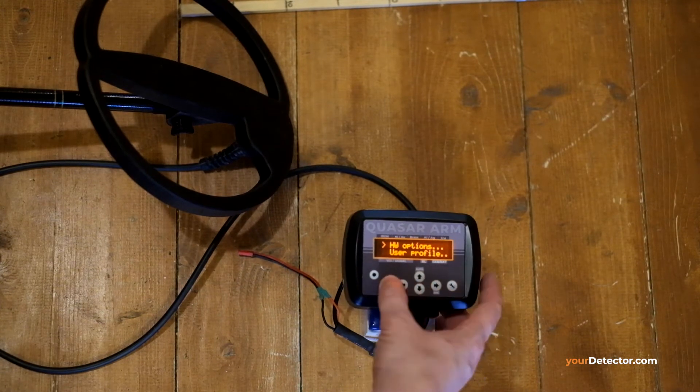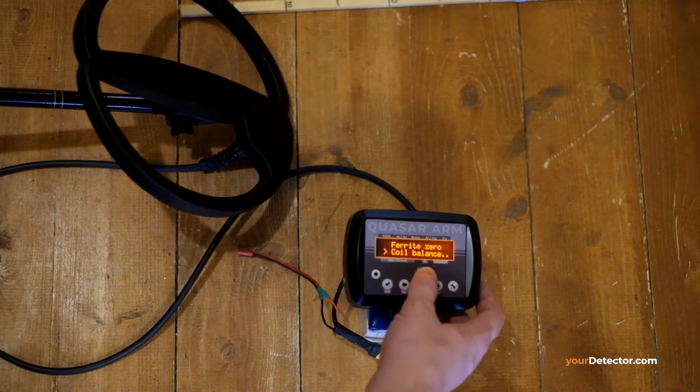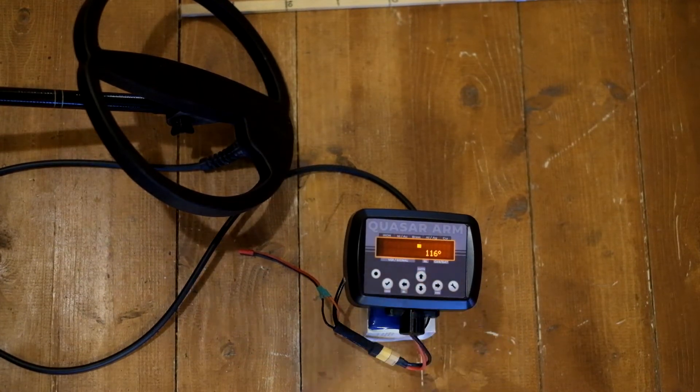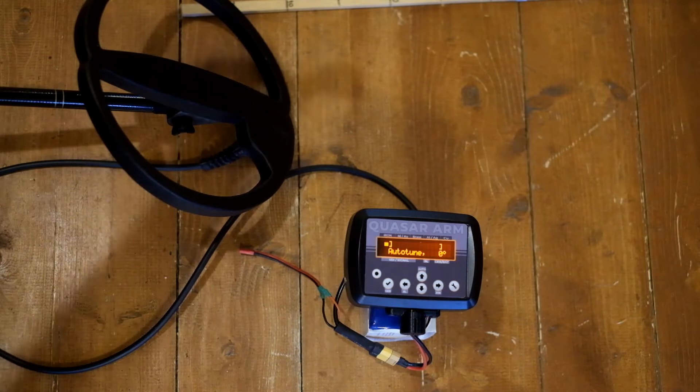We go to these options, hardware options, find ferrite, push auto, and the only thing you need to do is bring the ferrite close to the coil.